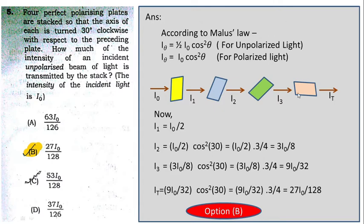After passing through the fourth polarizer: I_t = (9I₀/32) cos²(30°), which gives 27I₀/128. So option B is correct.